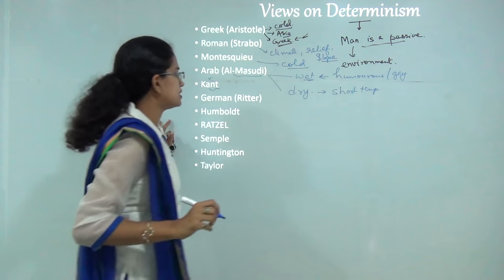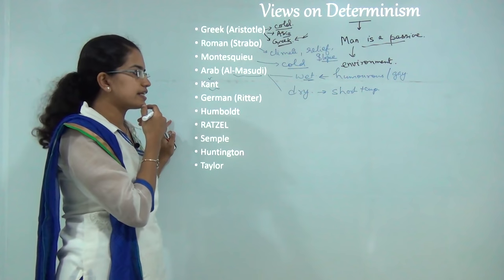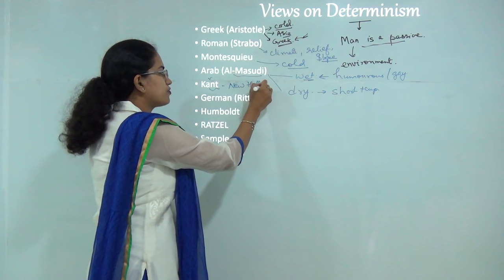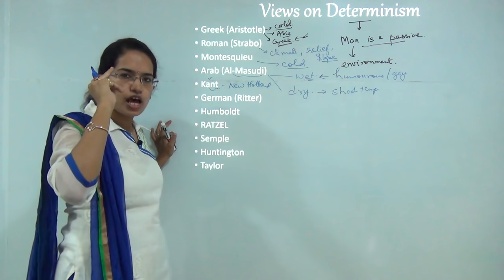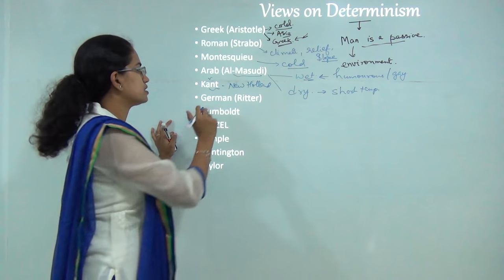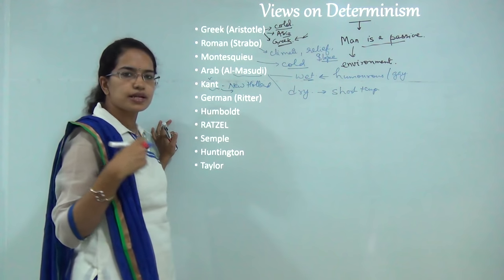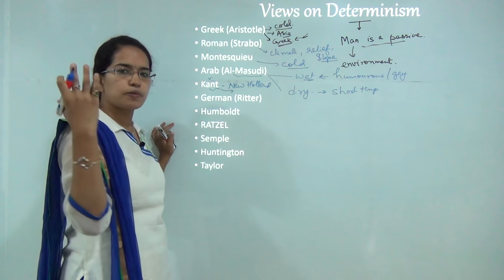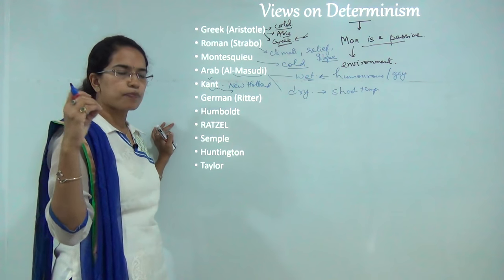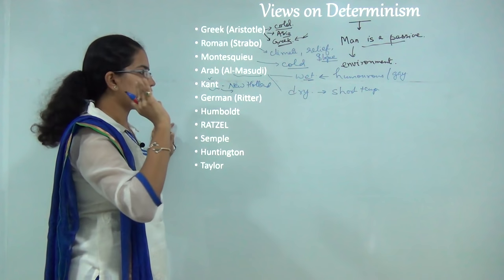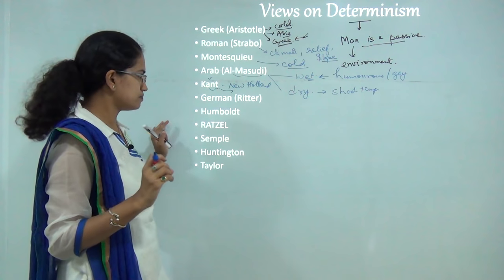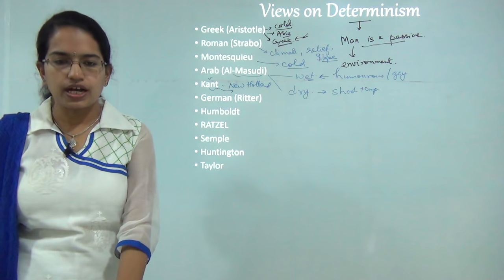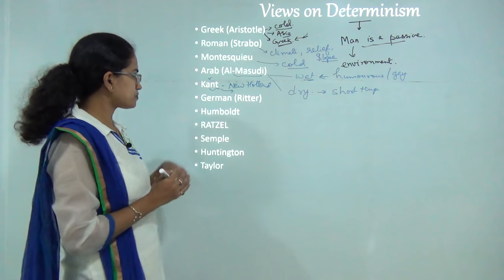Kant gave an interesting finding where he said the people of New Holland have half-closed eyes, and those half-closed eyes exist only because there are numerous flies or insects prevalent in that region. Just to protect their eyes from the attack of flies, they have developed half-closed eyes. These were some of the concepts followed under the deterministic approach.